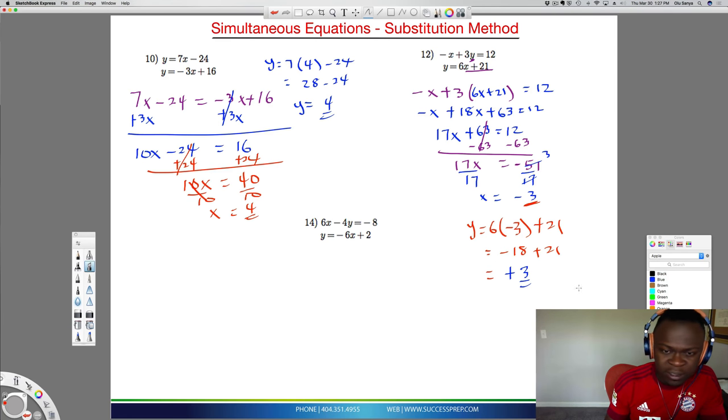If you look at number 14, this y equal to minus 6x plus 2 is a really good one. I can just take this and plug it in here for this y. So I'm going to start with 6x minus 4, but instead of writing y, I plug in minus 6x plus 2. All of this is equal to negative 8. This is 6x. If you do this, minus 4 times all of that is going to be plus 24x, and then minus 4 times 2 is negative 8, equal to negative 8.